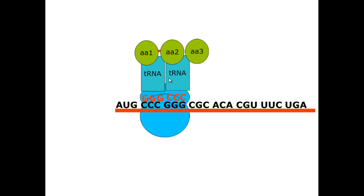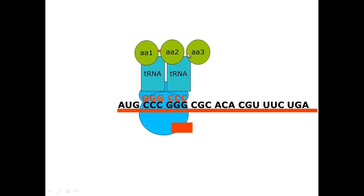Again, the same thing happens. Amino acid 2 and amino acid 3 need to join up, and you get a peptide bond being formed between those two. This continues all the way down to the bottom end of the mRNA until it reaches the stop codon.